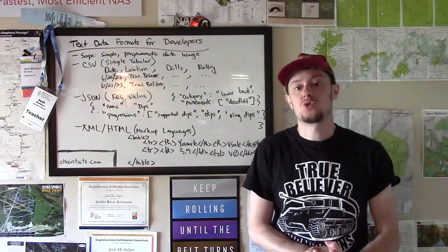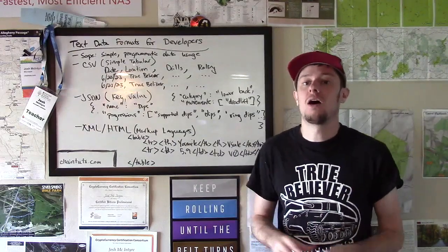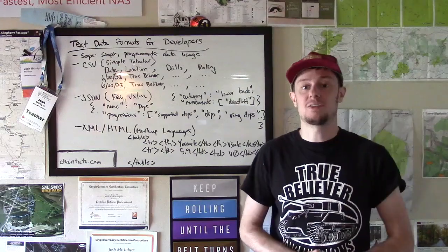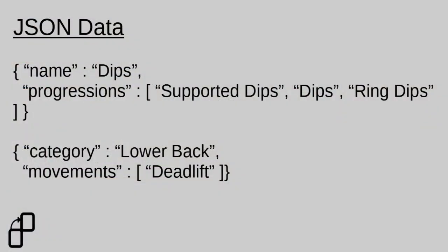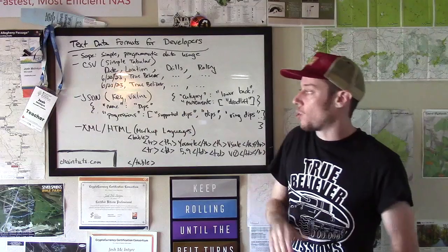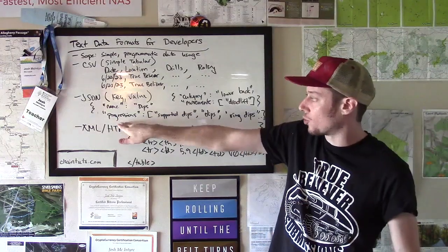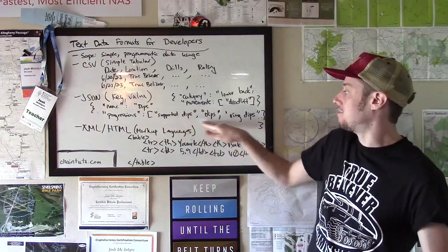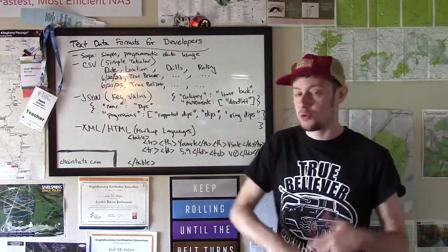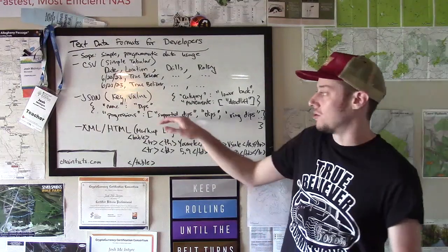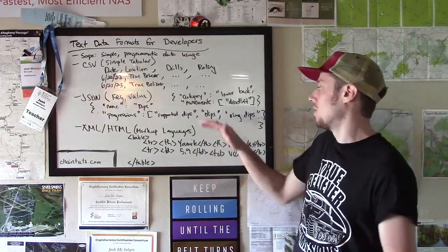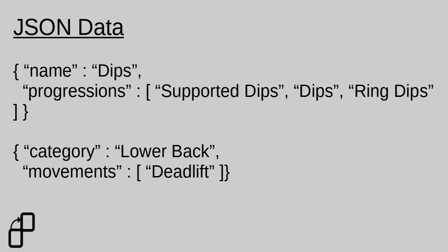So let's say for example we want to store a couple different files of information about resistance training exercises like strength training that you would do in the gym. We can have one file that contains information about bodyweight training progressions. So for our key we have name and then we have a value of dips. And here we can store something that's a little bit more complex. So for our progressions key we actually have a list value of different progressions of the dips from easier to harder. So some type of supported dips, regular dips, ring dips, there's all sorts of variations that you can do.